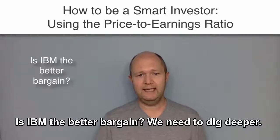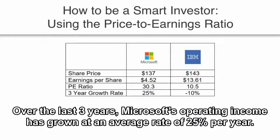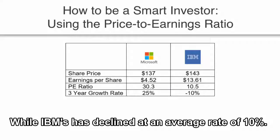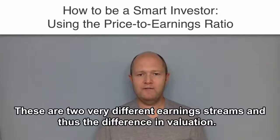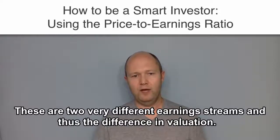We need to dig deeper. Over the last three full years, Microsoft's operating income has grown at an average rate of 25% per year, while IBM's has declined at an average rate of 10%. These are two very different earnings streams and thus the difference in valuation.